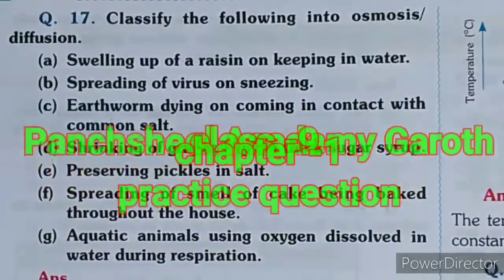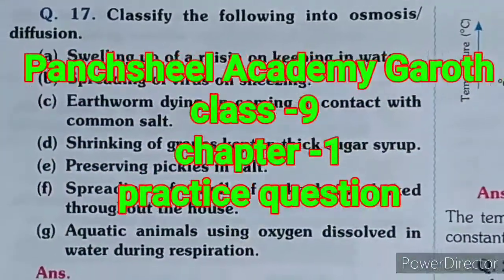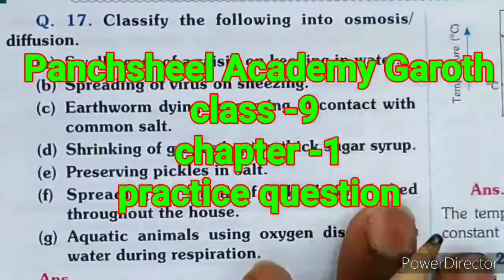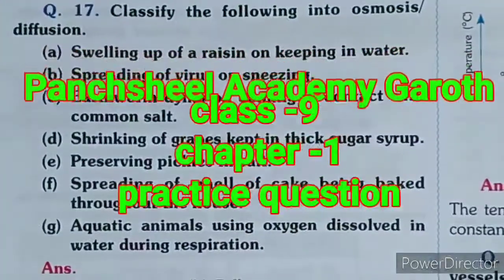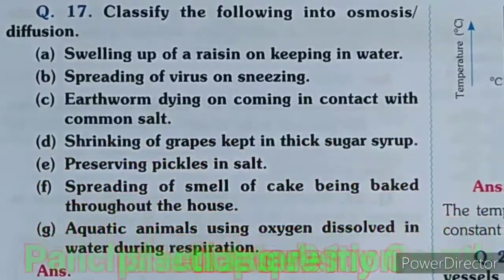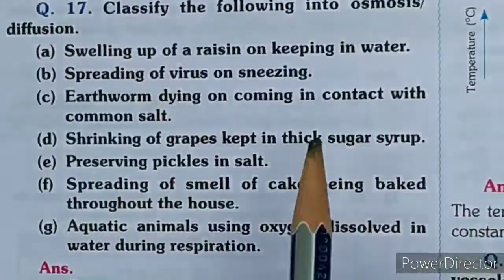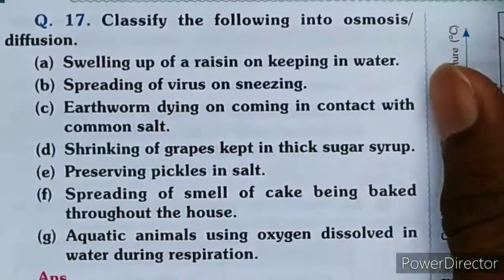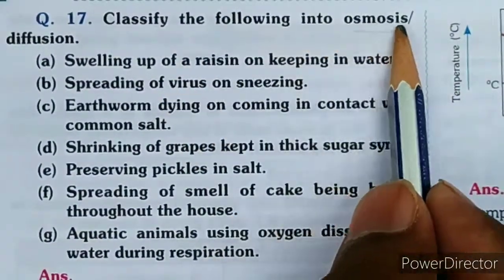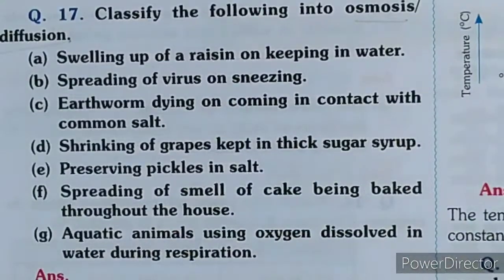Good morning, welcome to our class. Let's start some more questions of Chapter 1 - Matter in Our Surrounding. Question number 17: classify the following into osmosis and diffusion. Some processes are given and you have to classify them.